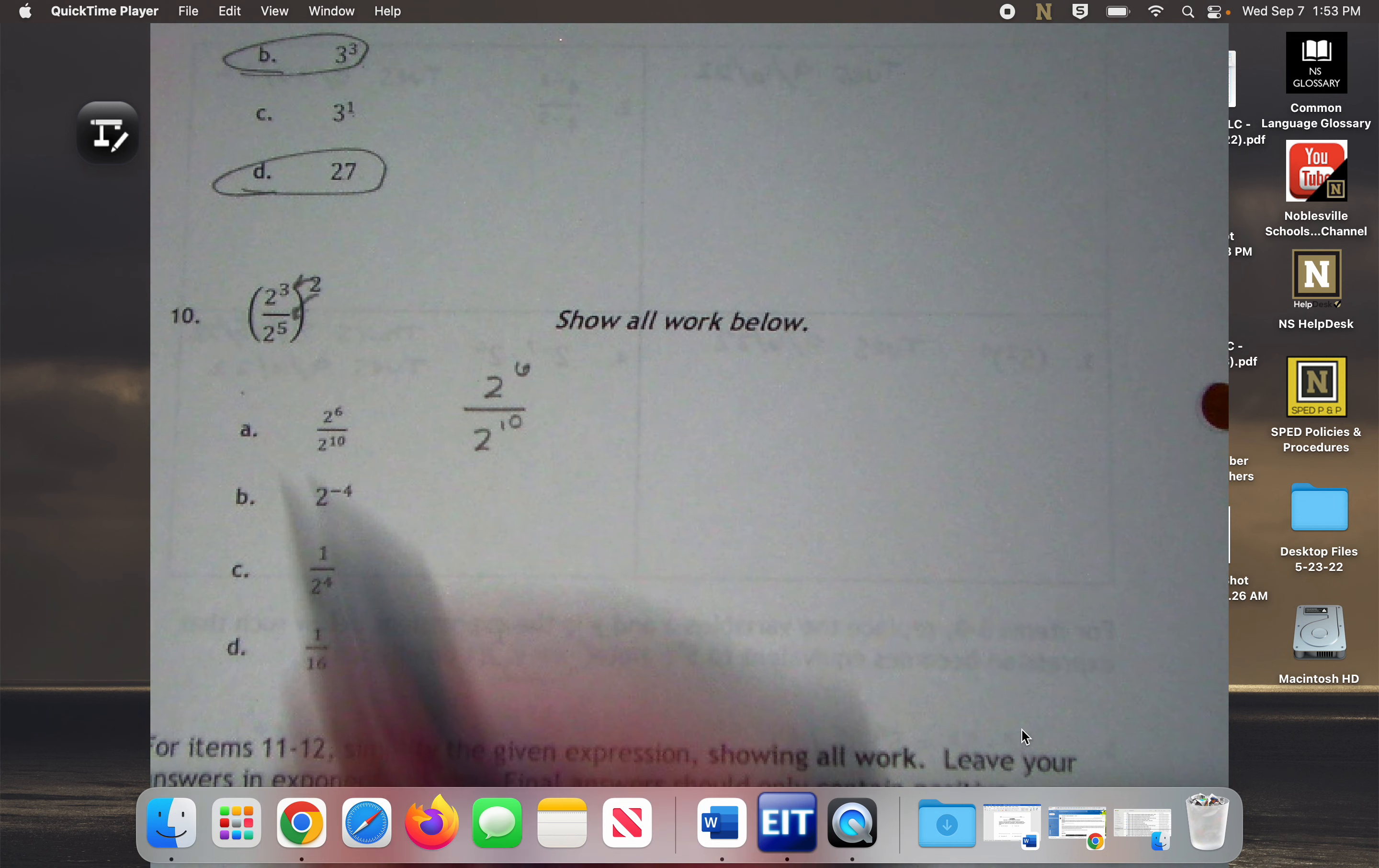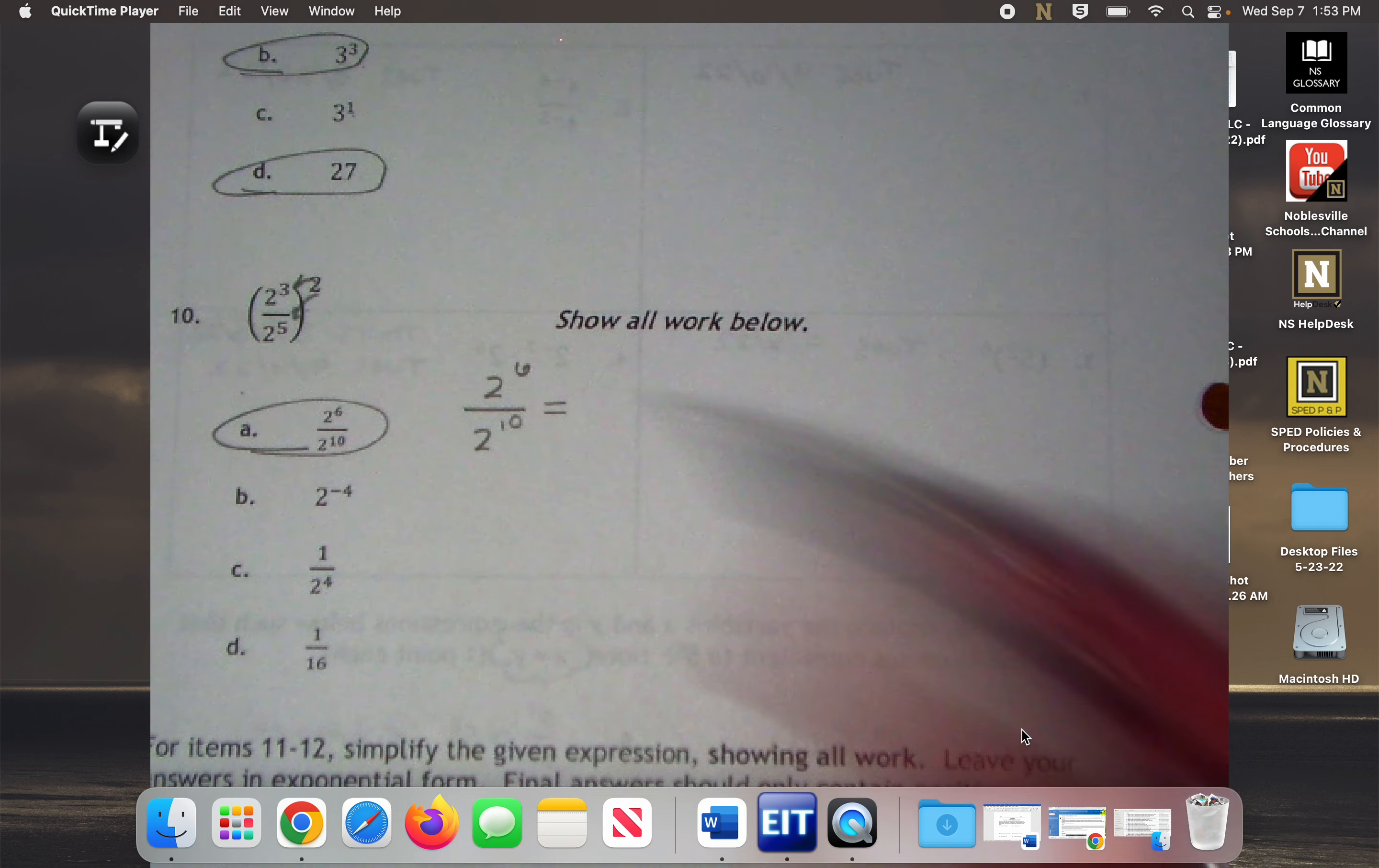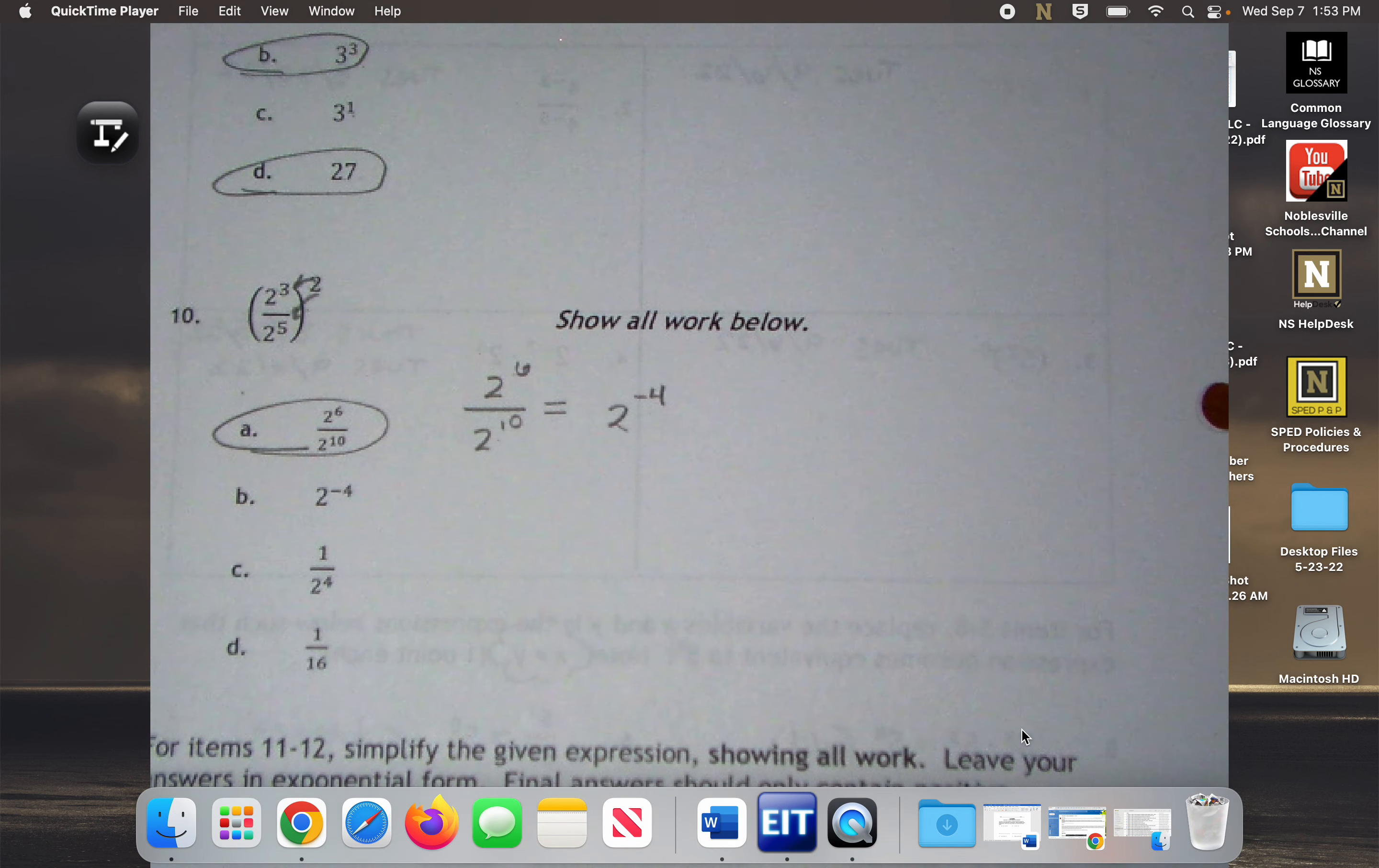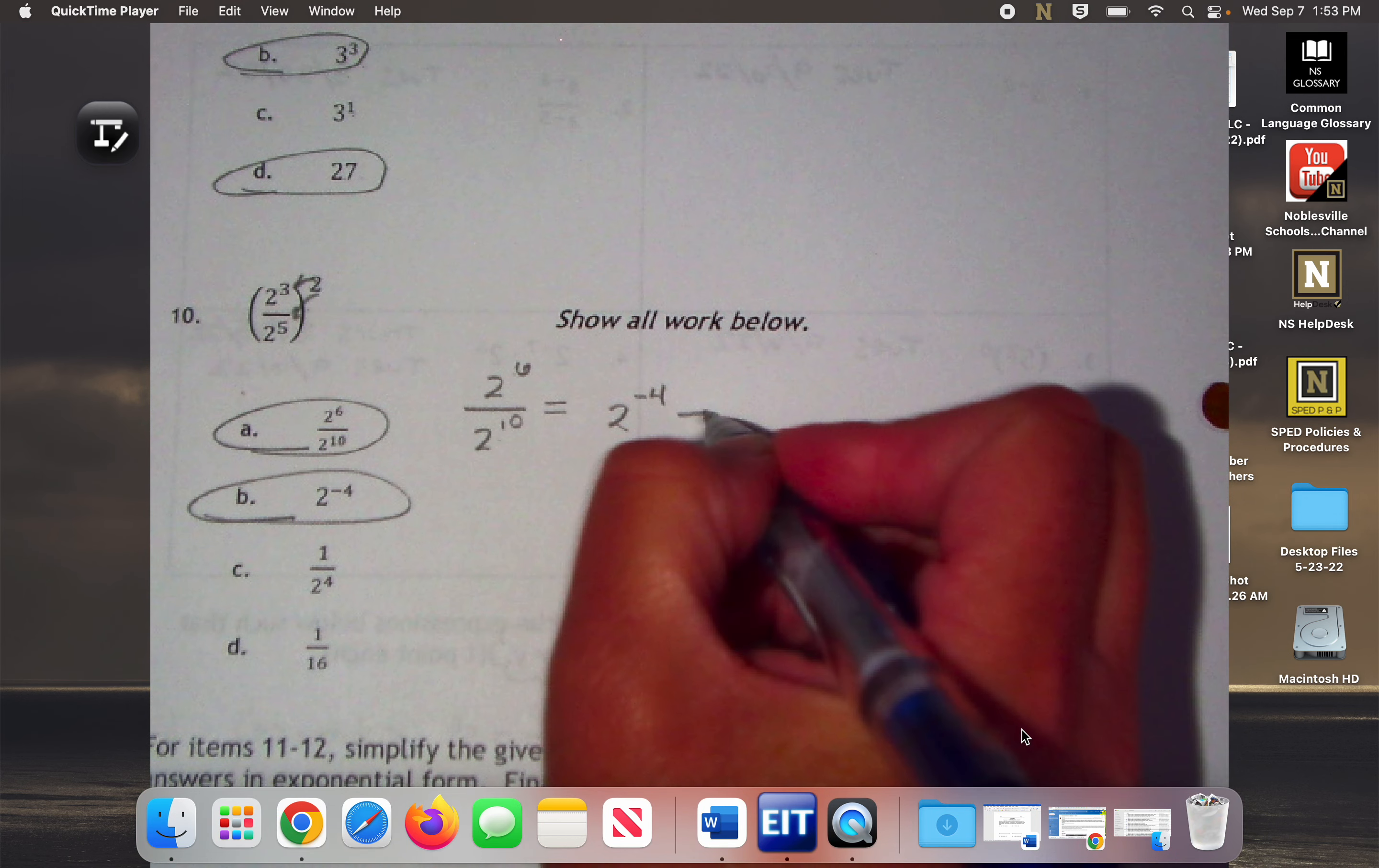What am I going to do now? Subtract. And what is 6 minus 10? Negative 4. 2 to the negative 4. Do I see that in any of those? I sure do. I can't leave negative 4 like that. So what am I going to do to fix it? Flip it to 1 over 2 to the 4th. Do I see that in any of these choices? Yes. Sure do.